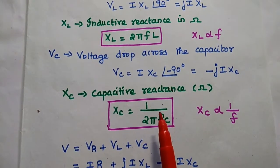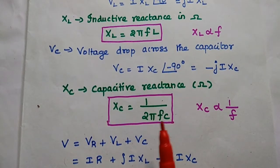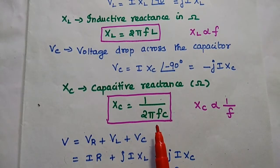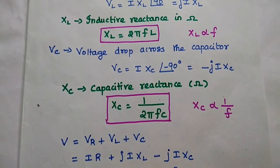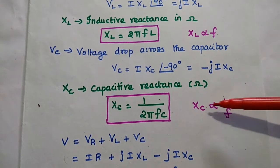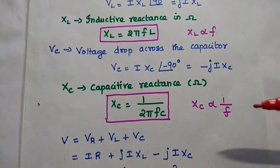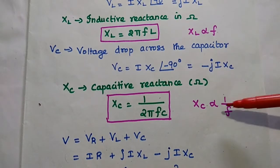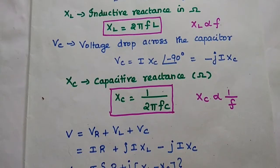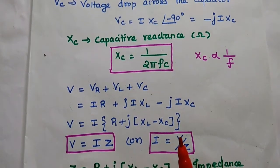The capacitive reactance can be obtained using the formula Xc = 1 / (2πFC). Capacitive reactance is inversely proportional to frequency, while inductive reactance is directly proportional. By adjusting these two values, we can achieve a particular resonant frequency — that is the concept used in the tuning circuit.